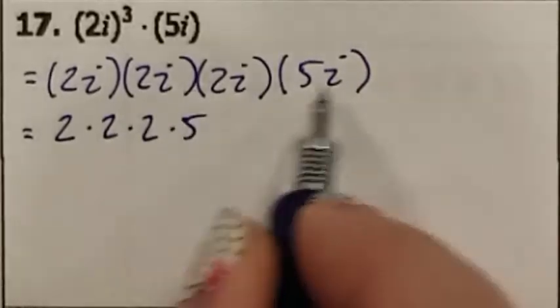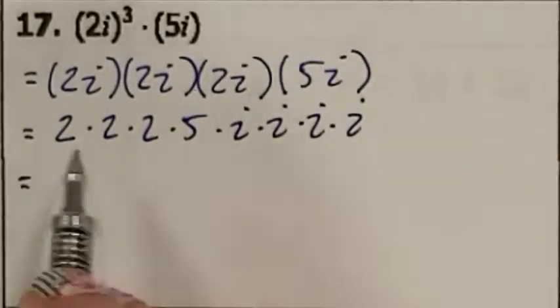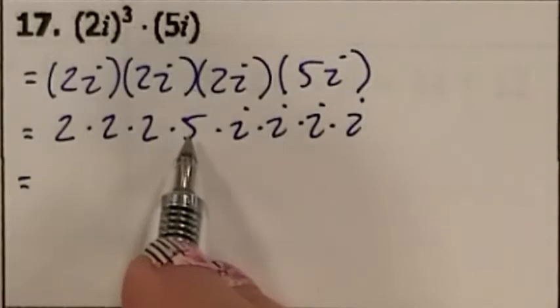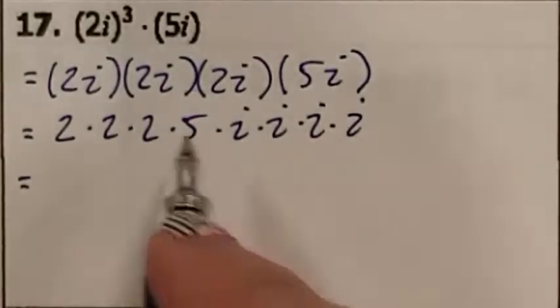And then i, i, i, i. 2 times 2 is 4. This 2 times 5 is 10. 4 times 10 is 40.